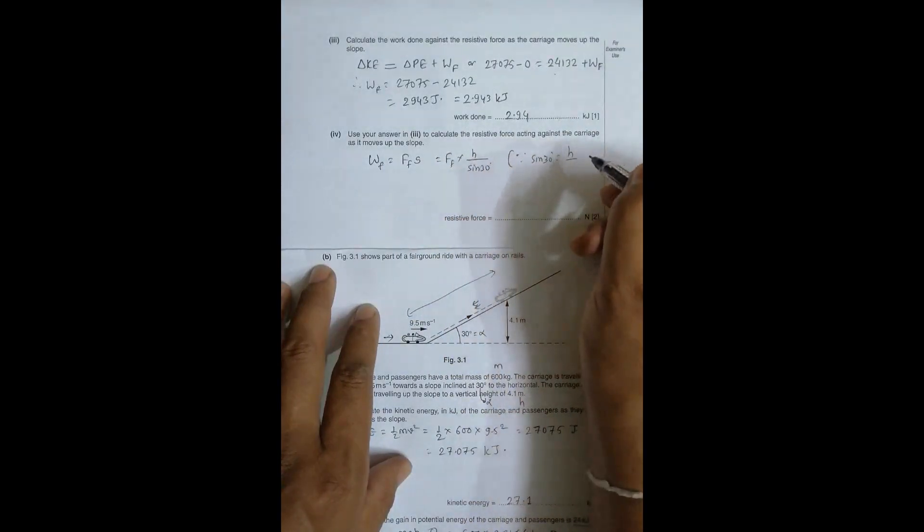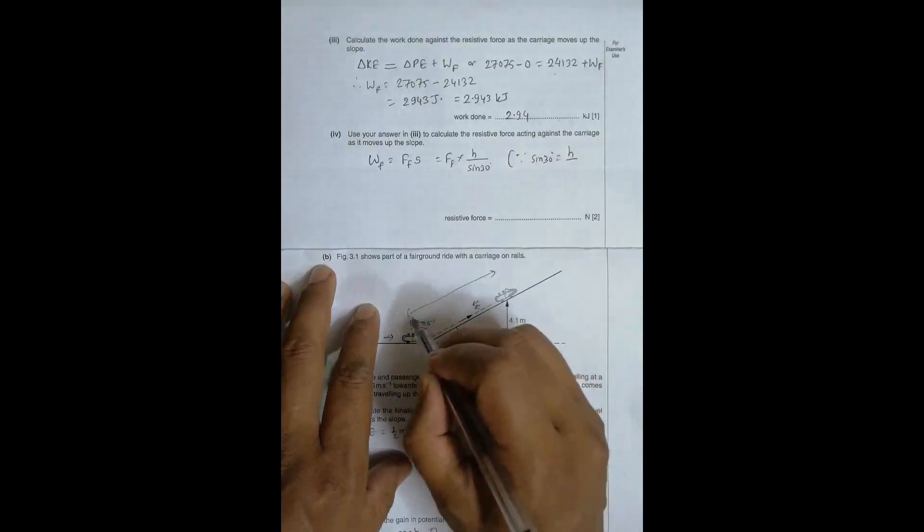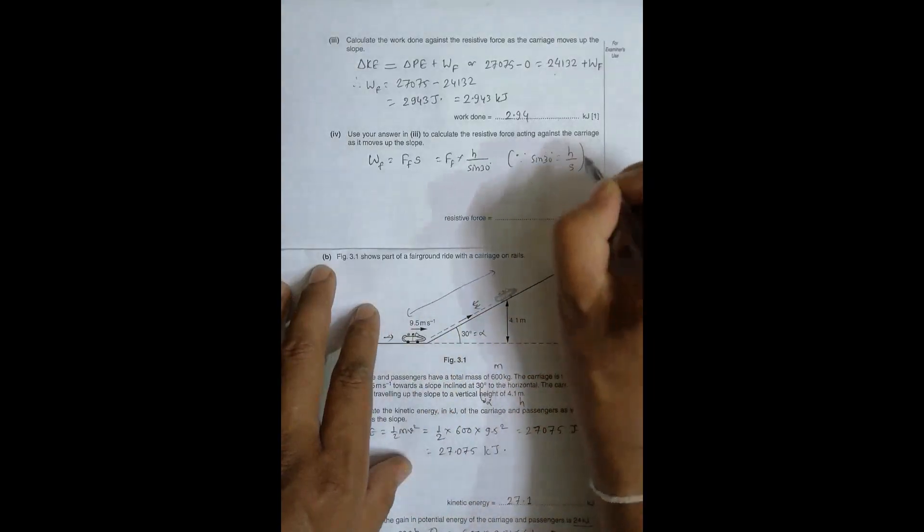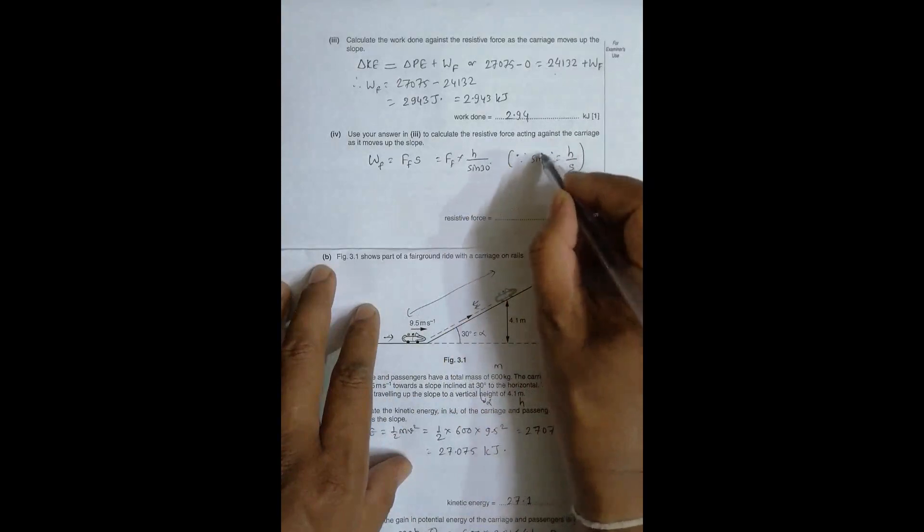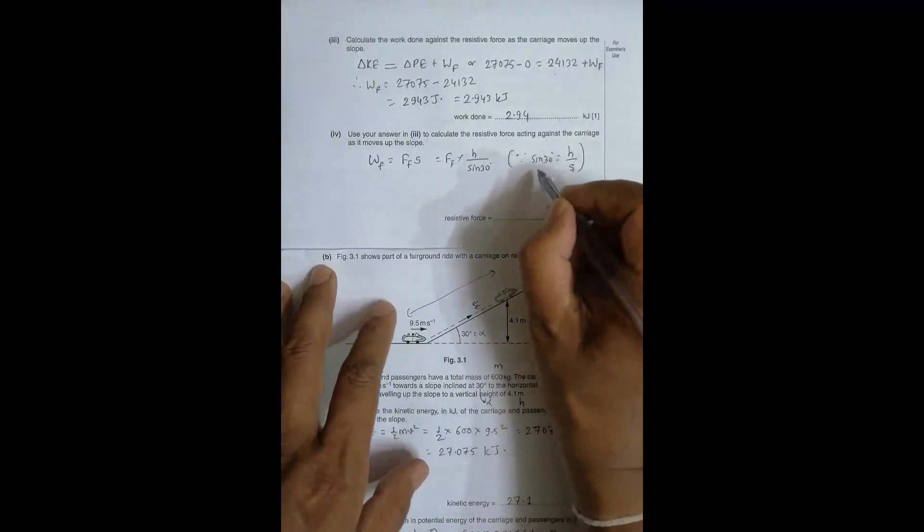Therefore, the frictional force Ff is equal to WF × sin(30°) divided by h. So s = h/sin(30°), which means Ff = WF × sin(30°)/h.